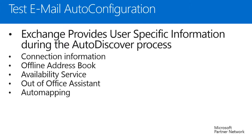The availability service is also dependent on auto discover working correctly. It is used when users use the scheduling tab on meeting requests to see if others are available. Without working auto discover this feature will not work. The Out of Office assistant uses a similar mechanism — users need working auto discover to successfully set their out of office reply. Auto mapping, which automatically adds accounts that users have full mailbox access to in Outlook, also requires working auto discover. One example is archive mailboxes with Exchange 2010 and above.